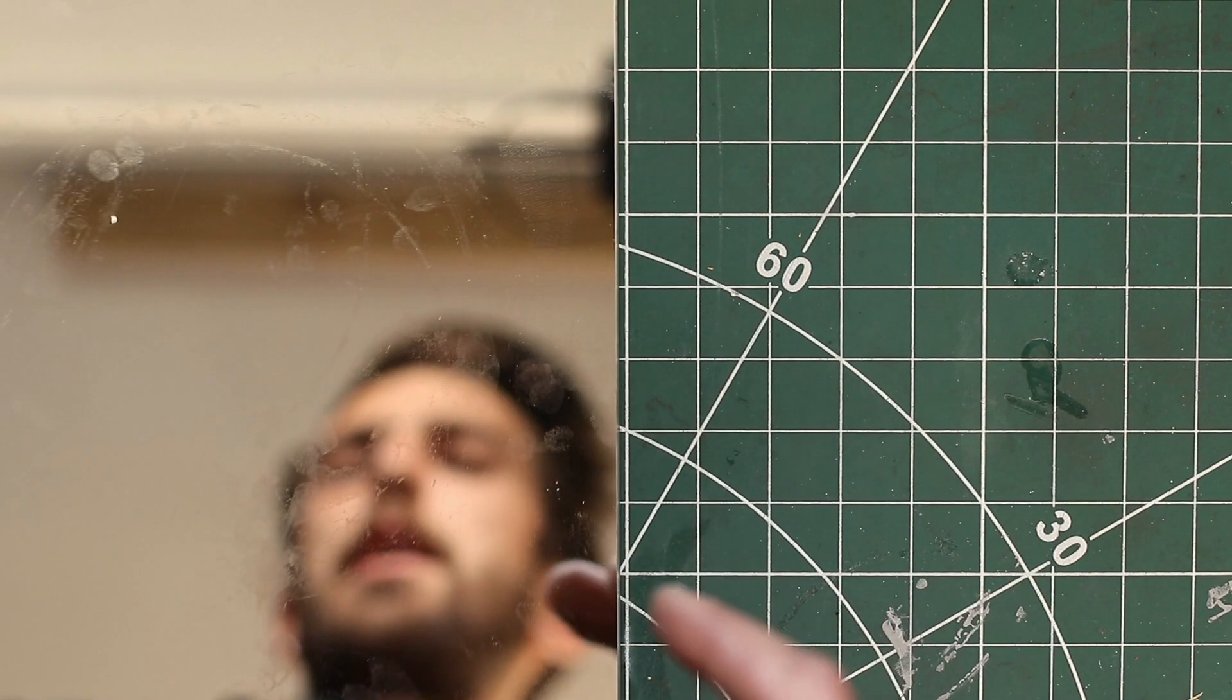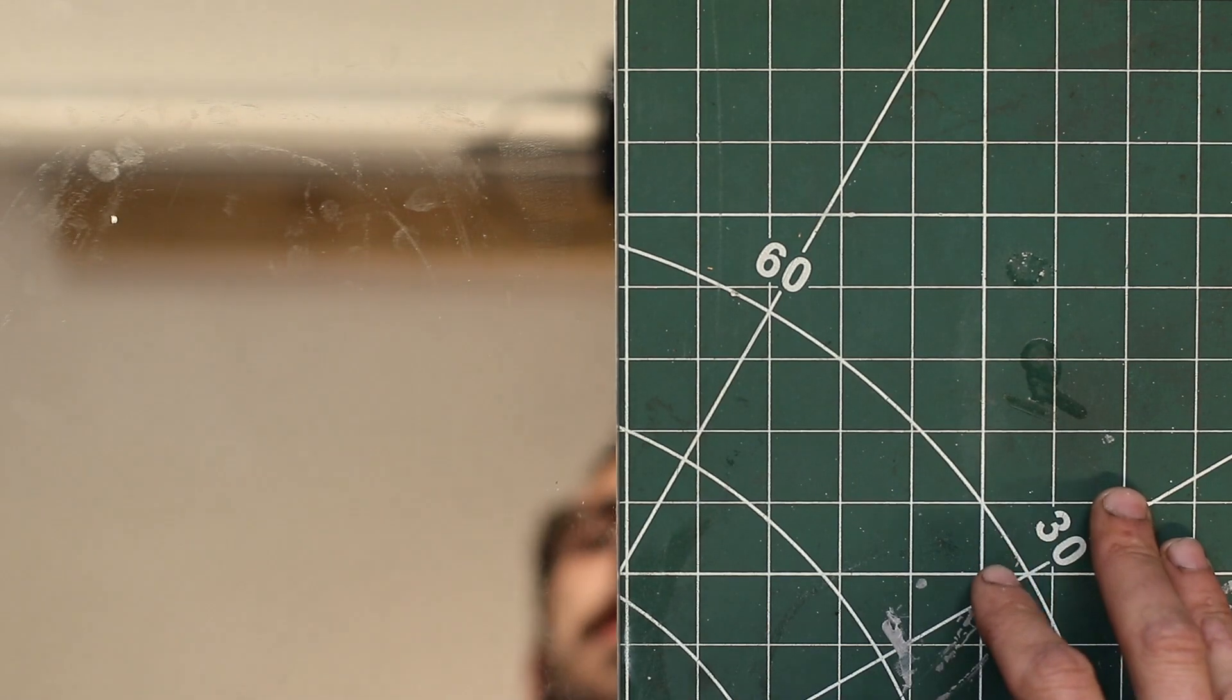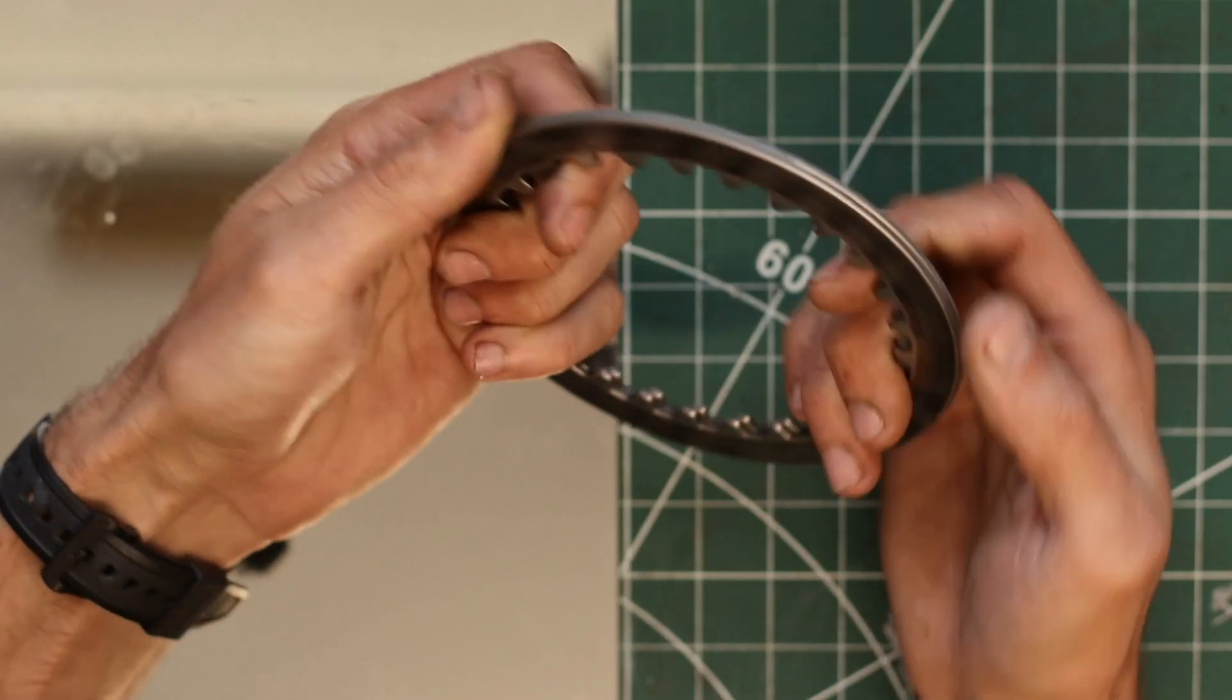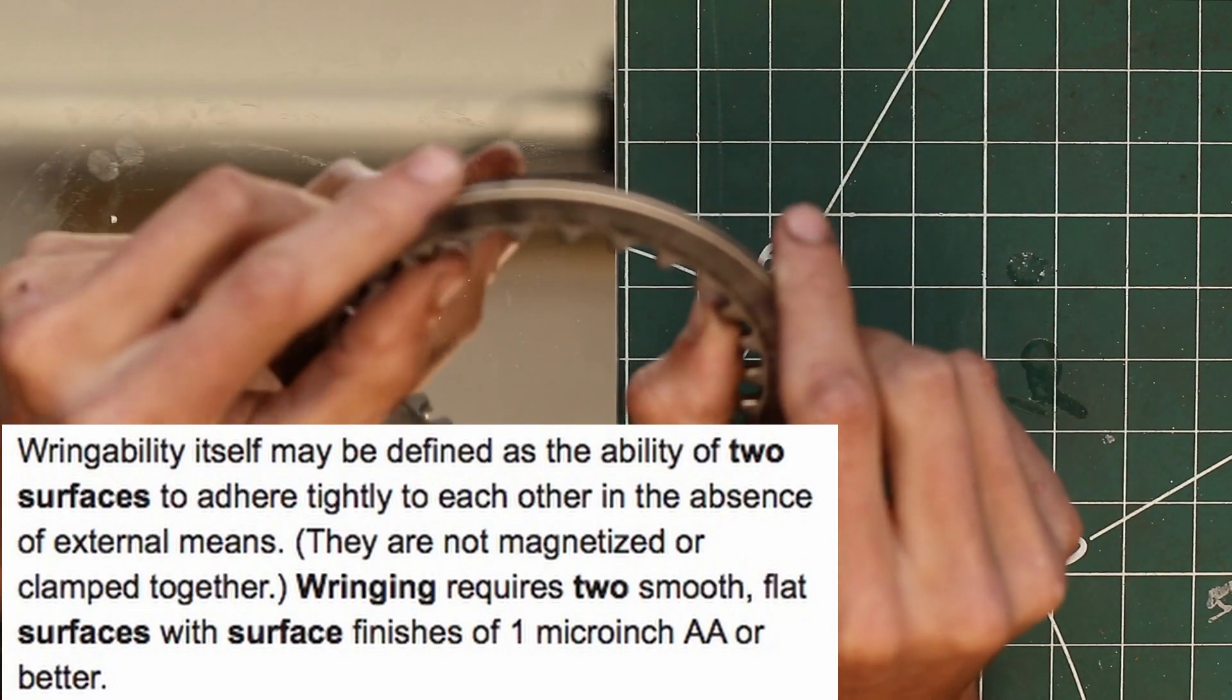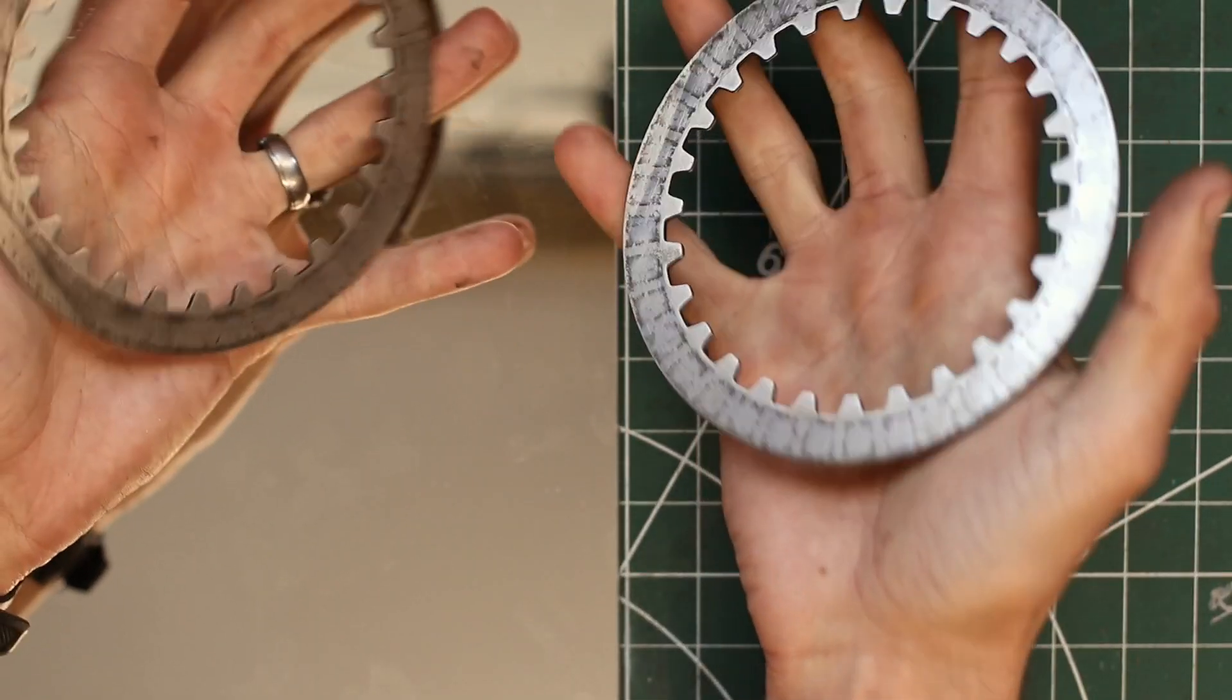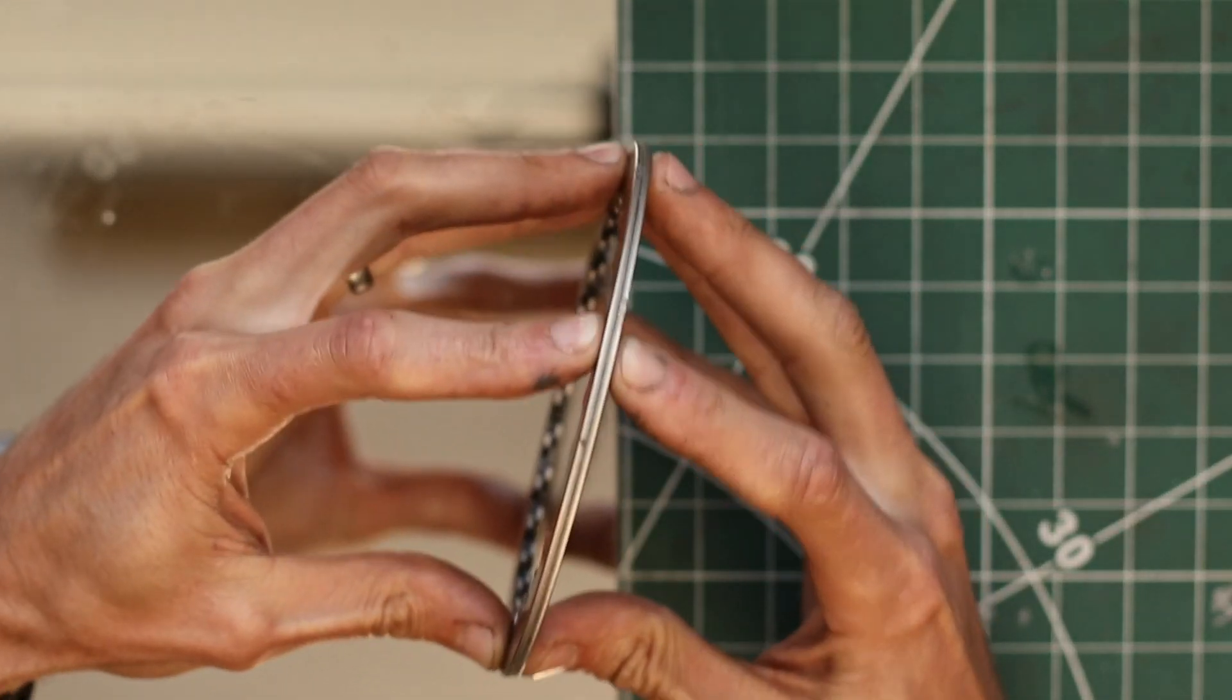Now this doesn't explain why my clutch has seized, but I've got two theories here. One of which is whether I used the wrong oil. So my last oil change I've used a semi-synthetic oil. The other thing that it could be is a phenomenon called ringing of two surfaces. Now what does that mean? That means two very smooth surfaces, when they are pressed together, they tend to stick together.